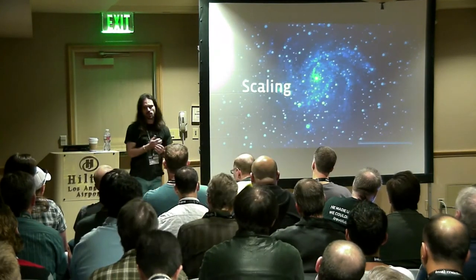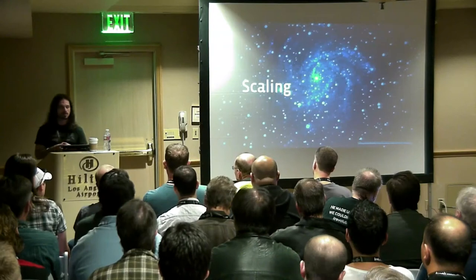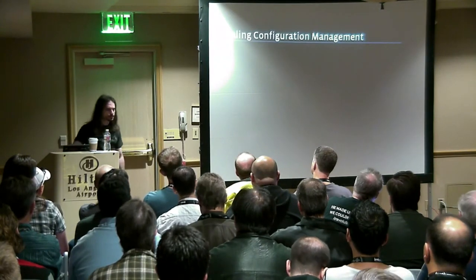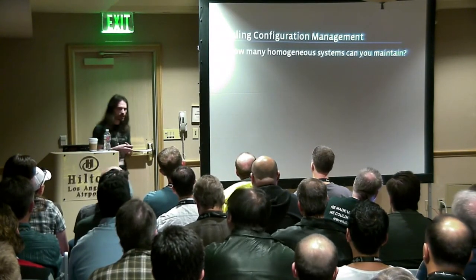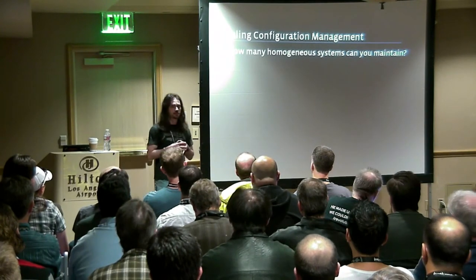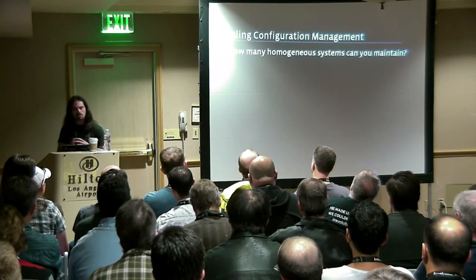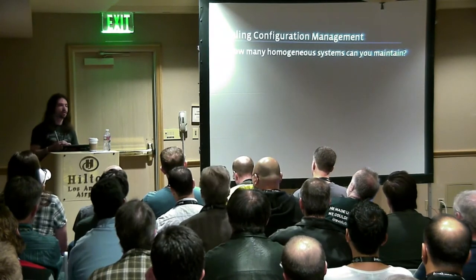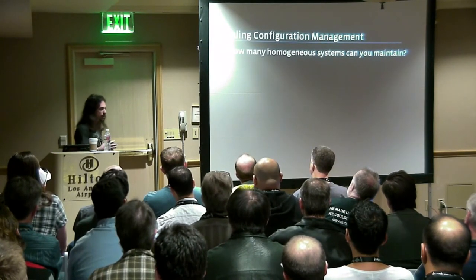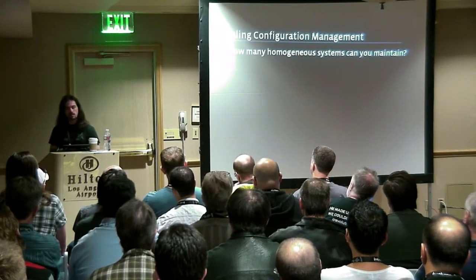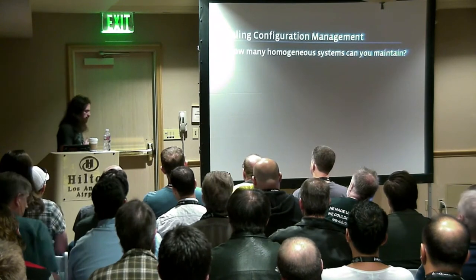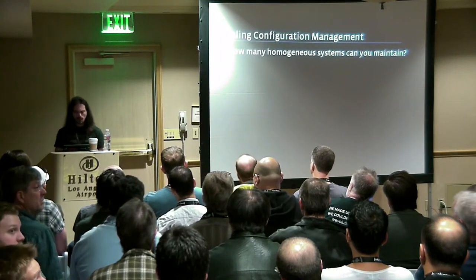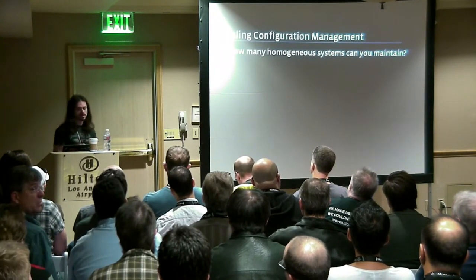So, scale. We have to talk about what scale means in order to understand how we want to meet it and where our configuration management system fits. The first question you might ask is: how many homogeneous systems can you maintain? If you have a huge number of absolutely identical systems, that's a very specific kind of problem. There are tools that solve this — you may get away with something as simple as rsync or rdist. IBM made a beautiful suite called xCAT, specifically designed for keeping HPC-style clusters running and identical. Scaling a system like this is a pretty unique problem.